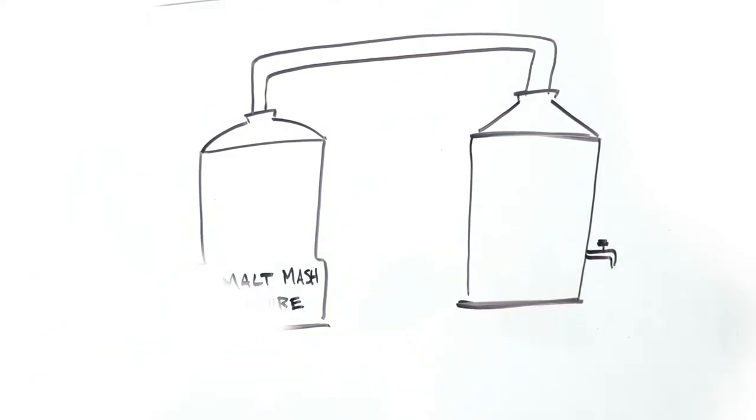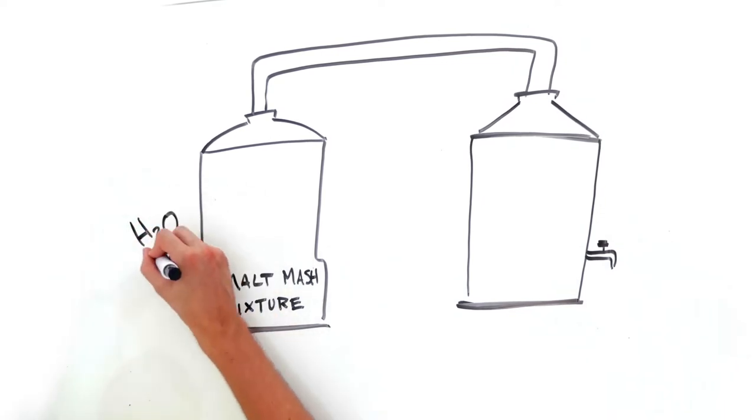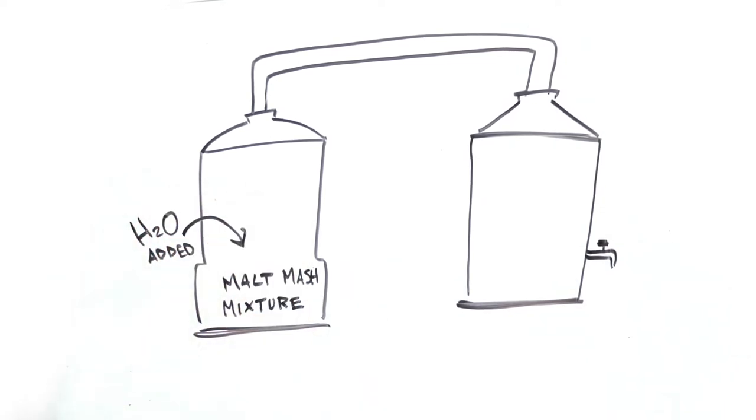Whiskey makers start with a malt mixture made from either corn, rye, or mixed grains. Water is added and brought to a boil which breaks down the starch and converts it to sugar. Once ready, they pour the mixture into a still and heat it to about 82 degrees Celsius.